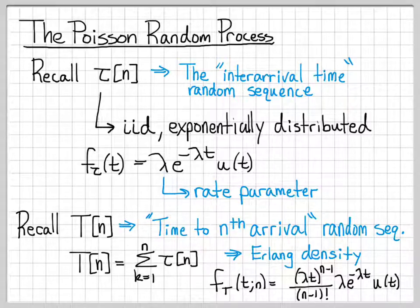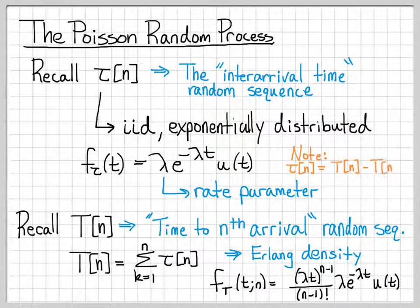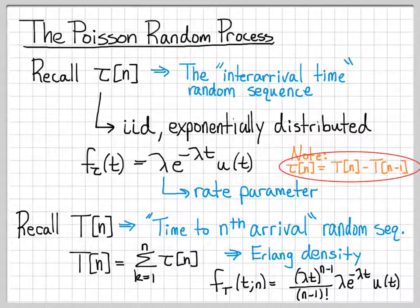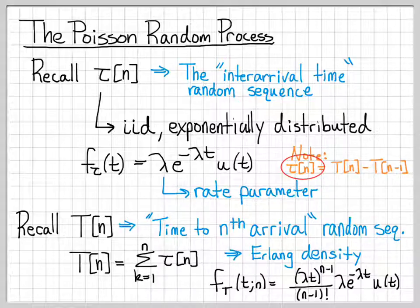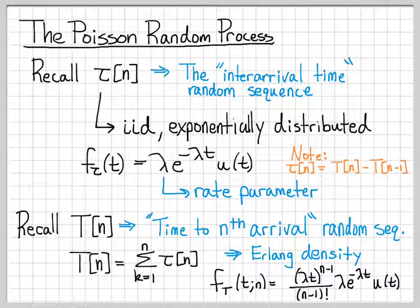These are the things we need to know to talk about the Poisson random process. One important relationship is an equation that relates the inter-arrival time sequence to the time to the nth arrival: tau of n equals t of n minus t of n minus 1. So tau of n is just the difference in the times to the nth and n minus 1th arrival. We'll use this equation in derivations of the density function of the Poisson random process.